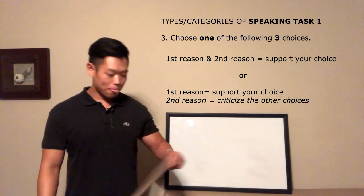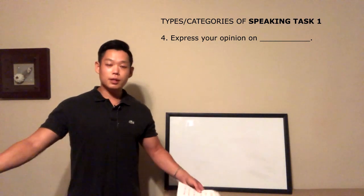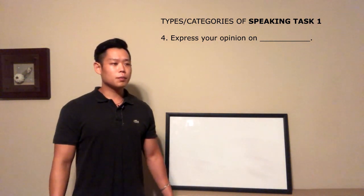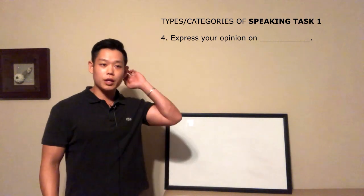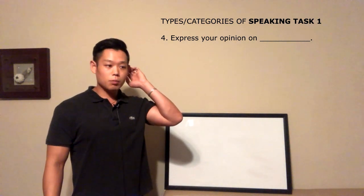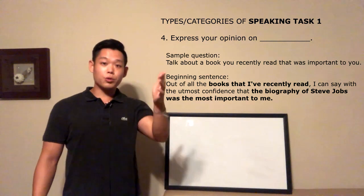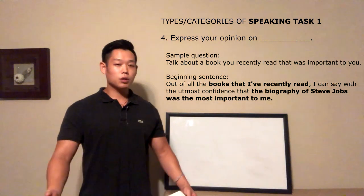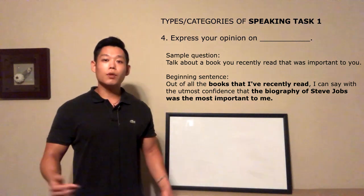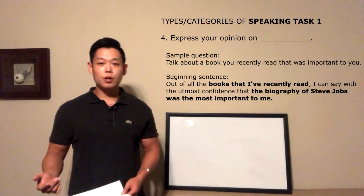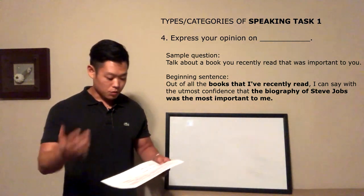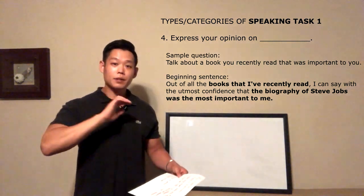The fourth type of Task 1 question is 'express an opinion,' which is the most common type. A good example is: 'Talk about a book that you recently read which was important to you.' For that question, the beginning sentence was: 'Out of all the books that I've read, I can say with the utmost confidence that the biography of Steve Jobs was the most important to me.'